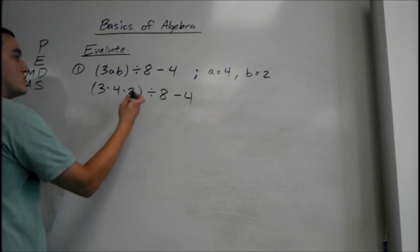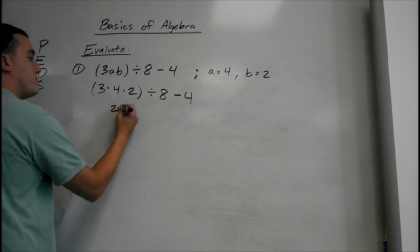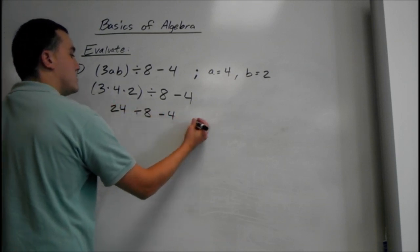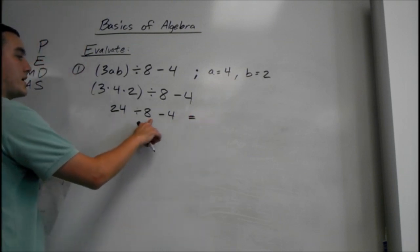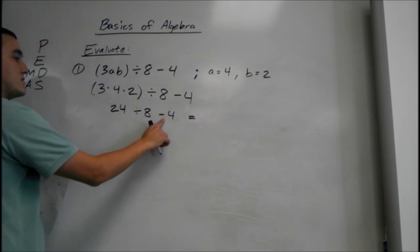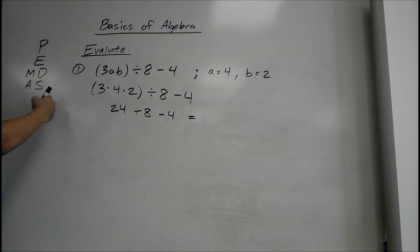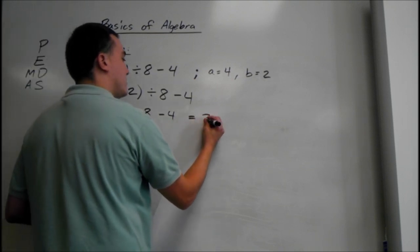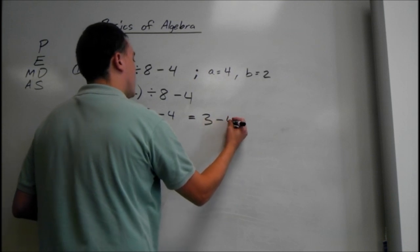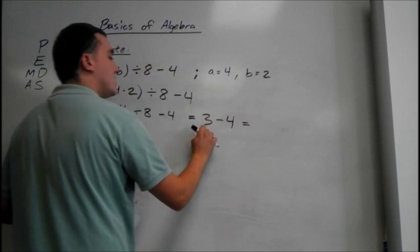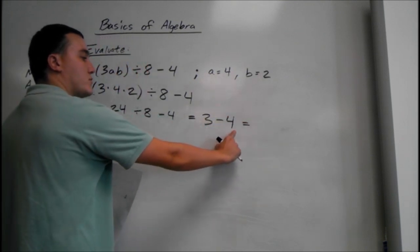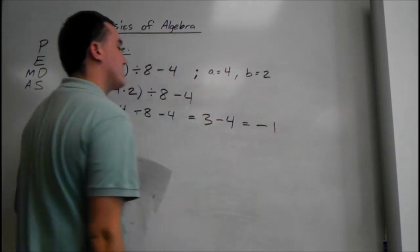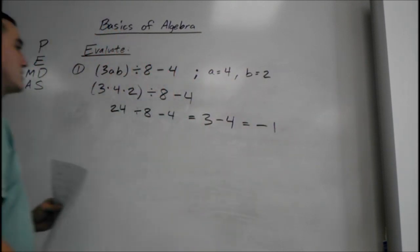3 times 4 is 12, times 2 is 24, divided by 8 minus 4, which equals 24 divided by 8. We do that next, not subtraction — just use PEMDAS. 24 divided by 8 is 3, minus 4 equals — we have a small number minus a bigger number — it's going to give us negative 1. So that's it for number 1.